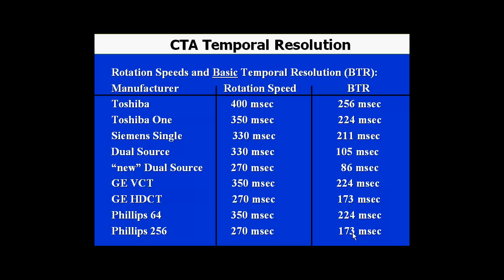These are examples of temporal resolution for a variety of scanners currently available on the market, from Toshiba, Siemens, Philips, and General Electric. Rotation speed could range from as slow as 400 milliseconds to as good as 270 milliseconds. The basic temporal resolution — looking at 180 degrees plus the 50 degrees of fan beam width — is given in the column on the right.